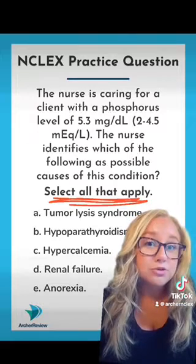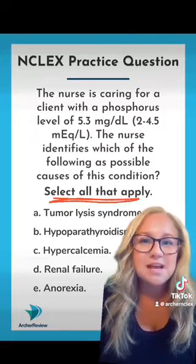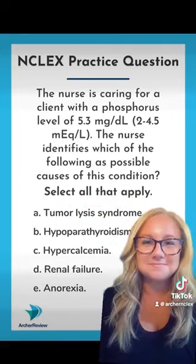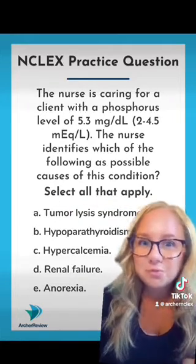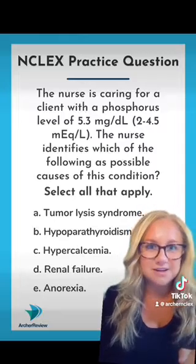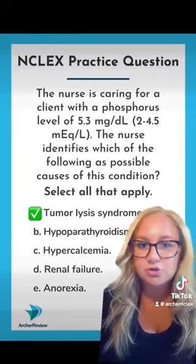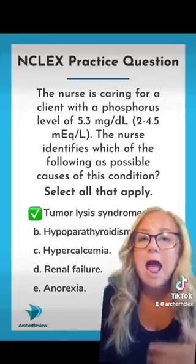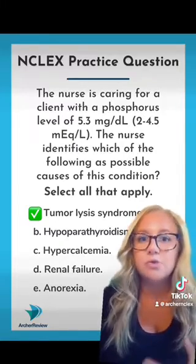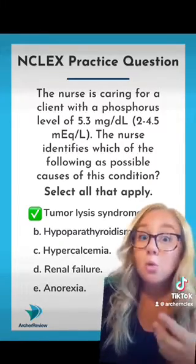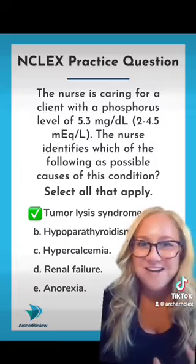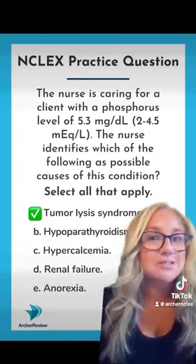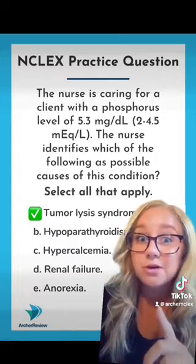Remember to use those SATA testing strategies and break this down into a bunch of true or false questions. First, A: can tumor lysis syndrome cause a high Phosphorus? Yes, this is true. Tumor lysis syndrome happens when a solid tumor bursts open and releases its contents into the bloodstream. One of those contents is a whole lot of Phosphorus, which means that the blood content increases rather quickly, and this is super dangerous.